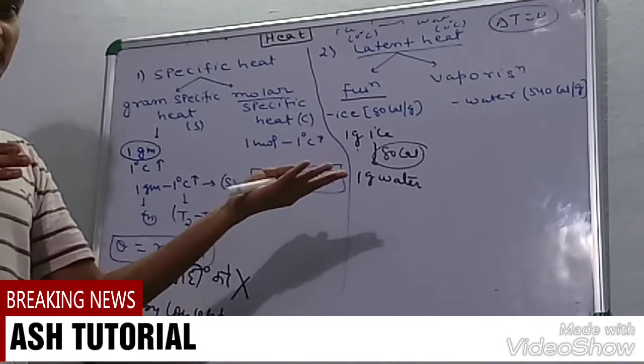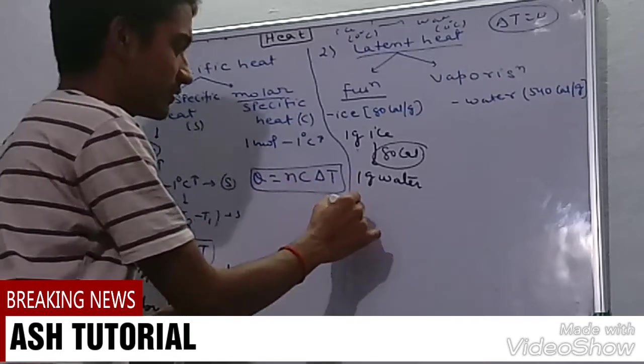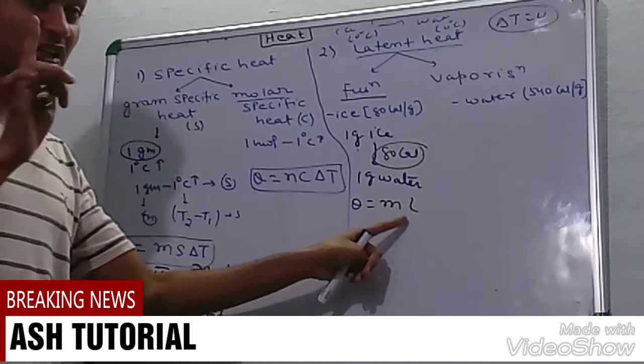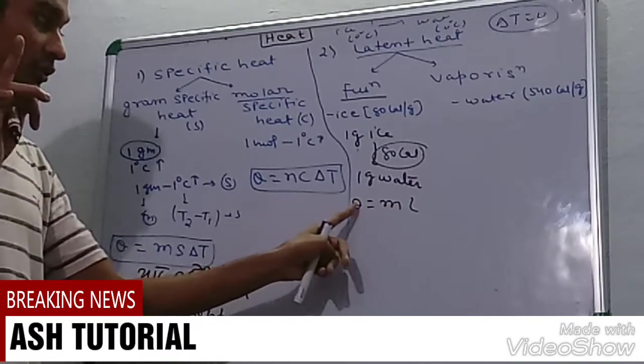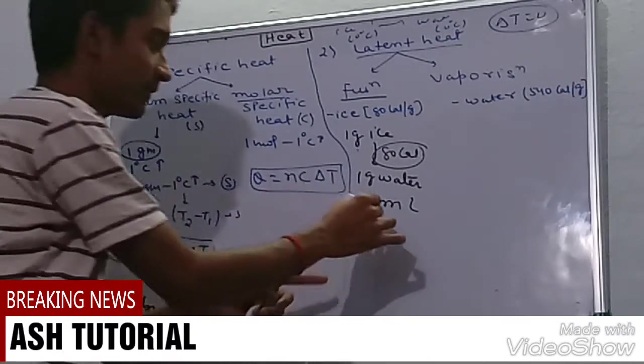If I want to convert m gram ice to m gram water, the heat required is m into L. Because L is for 1 gram, so Q is equal to m into L for m gram.